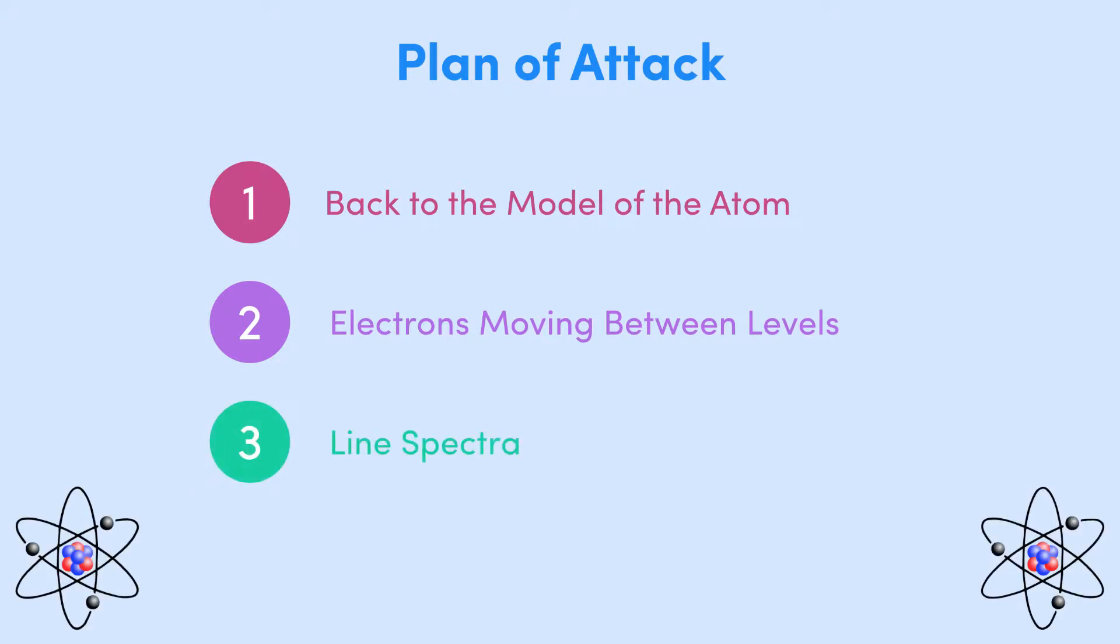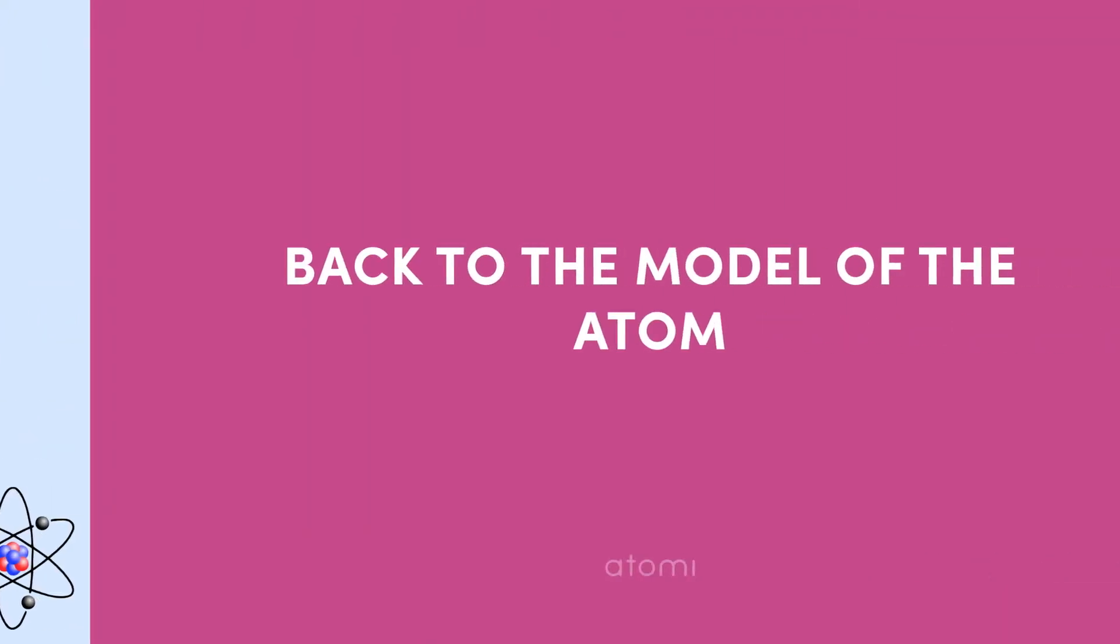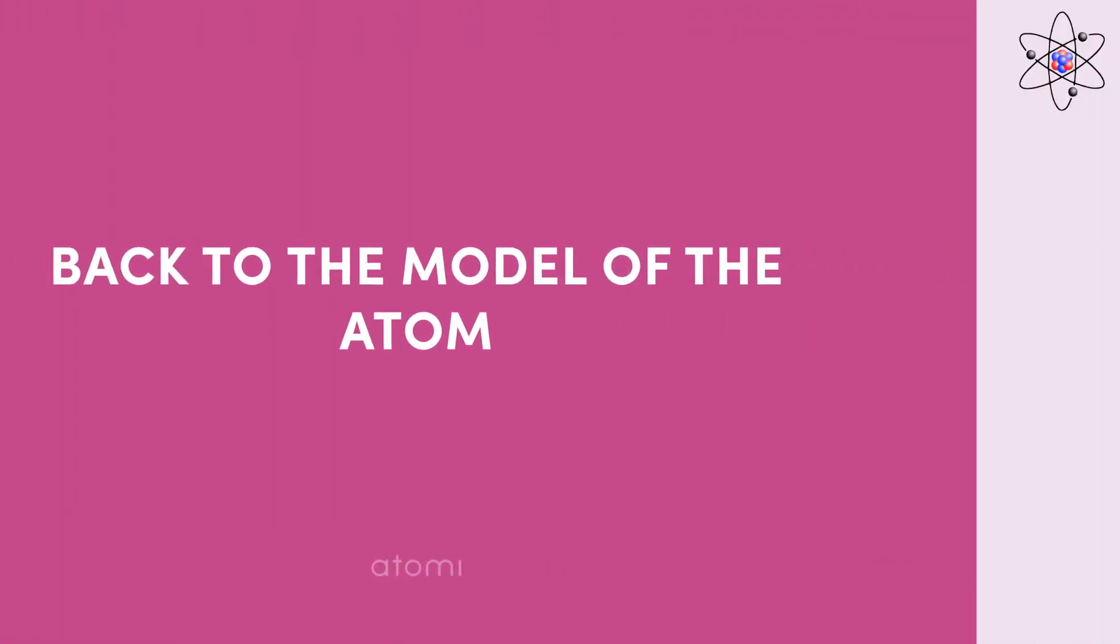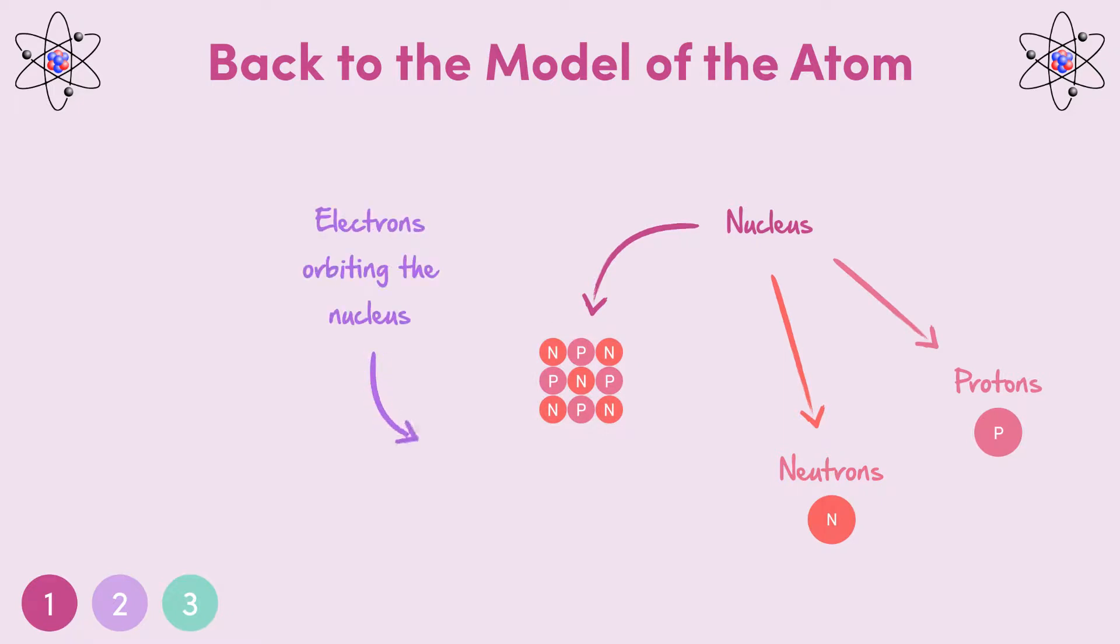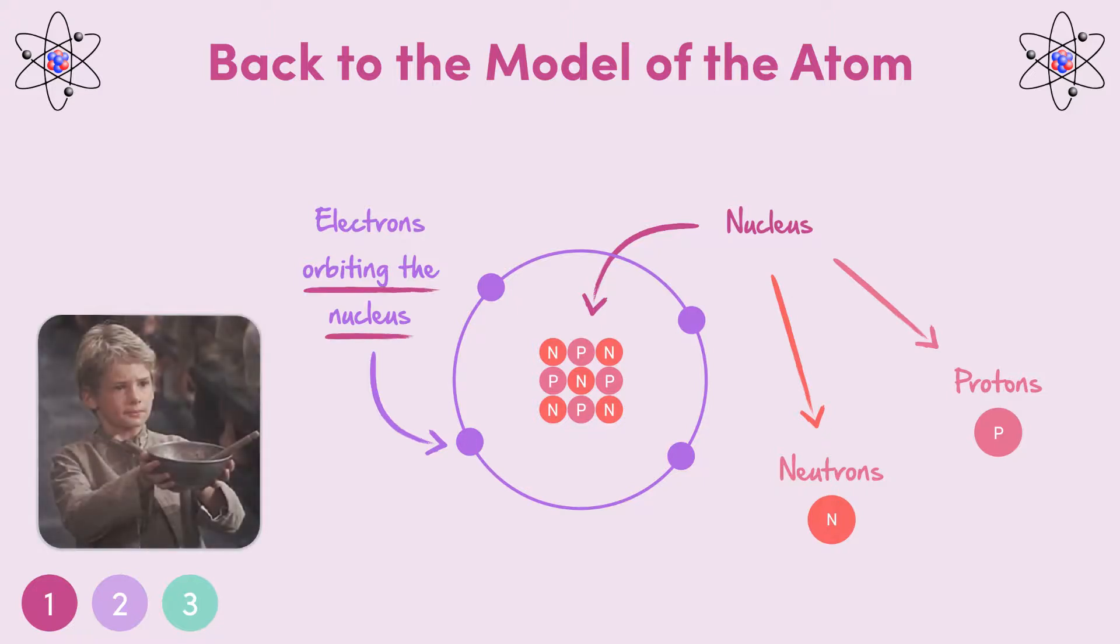Alright, so as I said, the first thing is to head back to our model of the atom. Remember that this includes the nucleus, which is made up of protons and neutrons, and the electrons, which orbit around the nucleus. So far, all I've said about the electrons is that they orbit around the nucleus, which might leave you wanting more. Like, is there anything special about their orbit? Well, the answer to that question is yes.